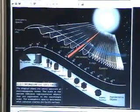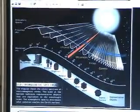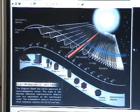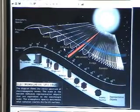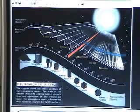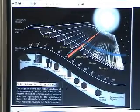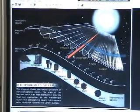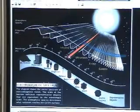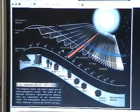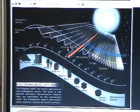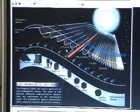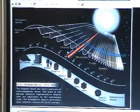As you can see, infrared — follow my mouse — it's right here, right next to the visible spectrum. Notice that it is next to red. That's where it gets its name. Infra means below, and red is the color red. It's right below red. Infrared. Get it?